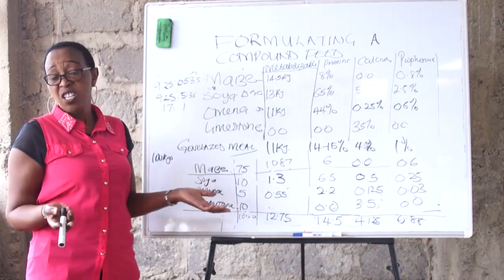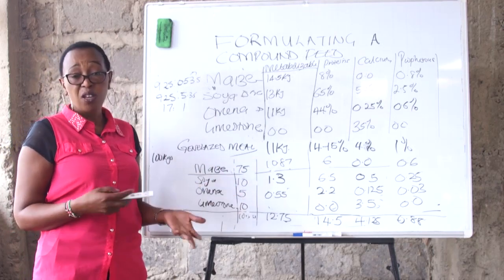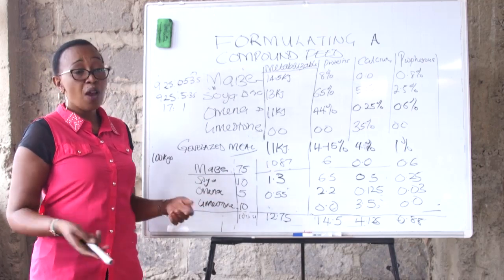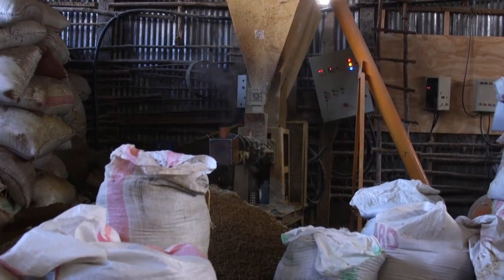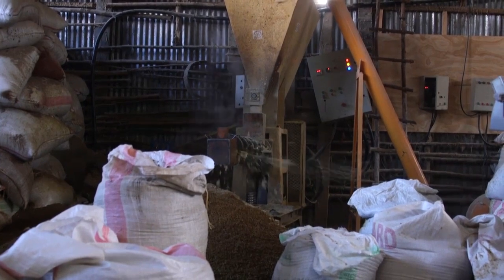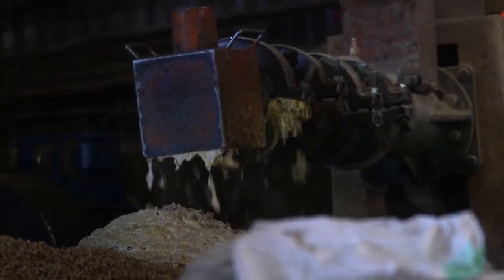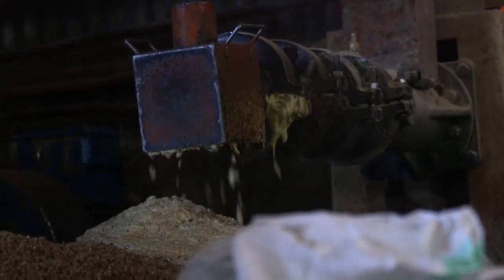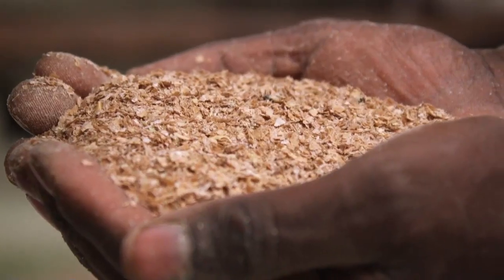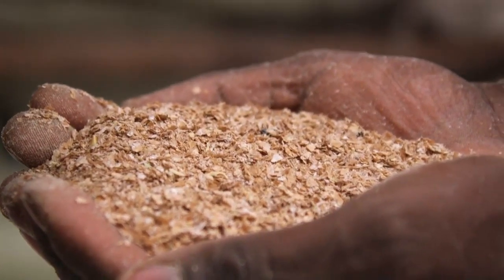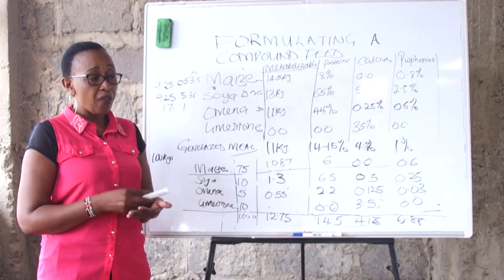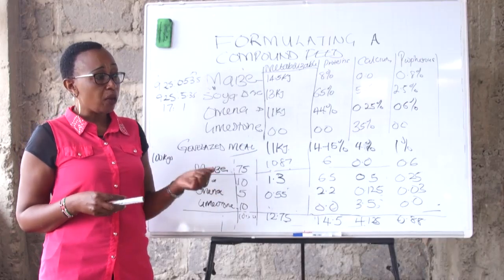You can mix them using a shovel, you can use a drum and roll it about, or you can use a mixer. People like us, we have the feed mill, we use the mixer. But you can just do mixing using the shovels and you'll be good to go. Ensure that the mixture has been thoroughly mixed.